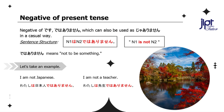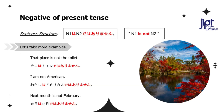Let's have a look at the examples of a negative sentence. I am not Japanese: Watashi wa nihonjin de wa arimasen. I am not a teacher: Watashi wa sensei de wa arimasen. Try making similar sentences on your own and practice more and more. That place is not the toilet: Soko wa toire de wa arimasen. I am not American: Watashi wa amerikajin de wa arimasen.